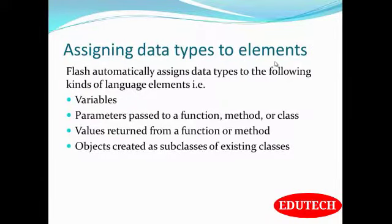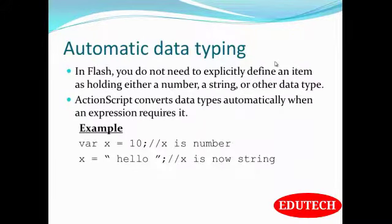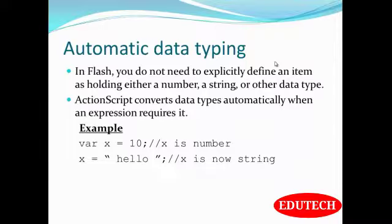Assigning data types: Flash automatically assigns data types to variables, parameters passed to functions, methods or classes, values returned from functions or methods, and objects created as subclasses of existing classes. Automatic data typing: in Flash, you do not need to explicitly define an item as holding a number, string, or other data type. ActionScript converts data types automatically when an expression requires it. Example: var x = 10 — x is now a number. If we then assign a string: x = 'hello' — x is now a string.